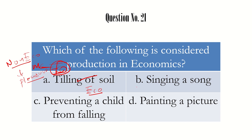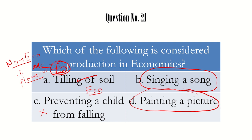Let us check the other options. Singing a song — there is no clarity given about who is singing, so it may not be for any commercial purpose. Preventing a child from falling is a good deed but not an economic activity; it is done out of humanity. Painting a picture — it is not clear whether it is a professional painter or someone doing it for self-satisfaction. So these options are not the answer. The answer is tilling of soil, assuming it is done by a farmer.